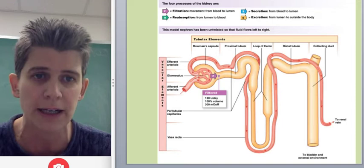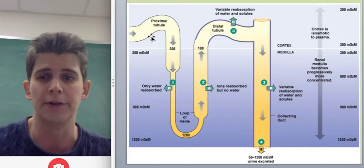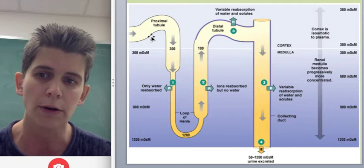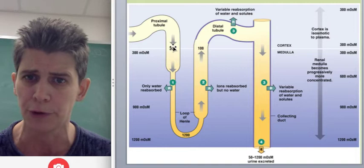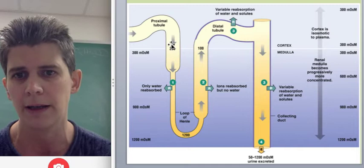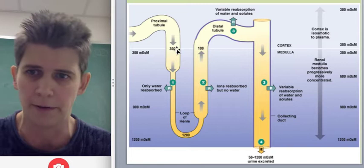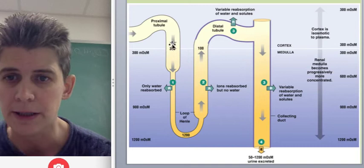Now, in the proximal tubule, what happens? All the organic molecules that your body wants are reabsorbed, glucose amino acids, and water and salt are reabsorbed proportionately. About 60% of the water and salts, water and ions, that enter the nephron are reabsorbed in the proximal tube. So at the end of the proximal tube, we have the same osmolarity, the same concentration that we had in the beginning, which is about 300, which is the same as your blood, the same as the blood of the animal, whatever animal it is.